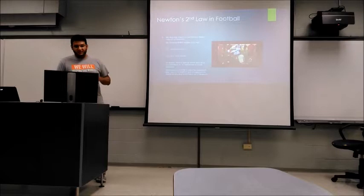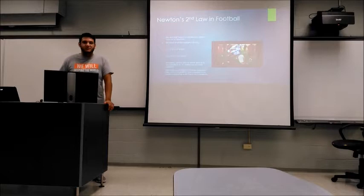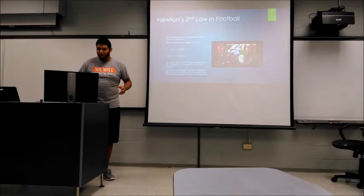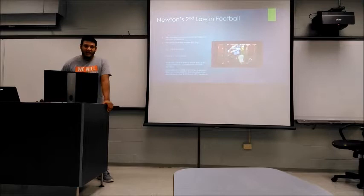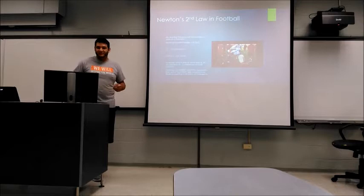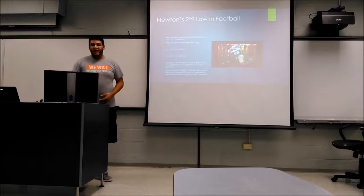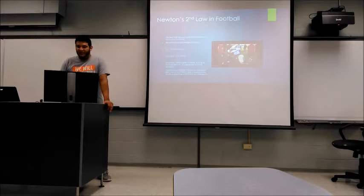Bob is on the losing end, weighing 118.2 kilograms. So we have 12 equals 118.2 times acceleration. Using the formula, acceleration equals force over mass: 12 divided by 118.2 equals 0.10 meters per second squared. That is the acceleration at which Bob is moving backwards, and the net force of 12 newtons is the amount of force acting against Bob. As you can see, John won the battle.